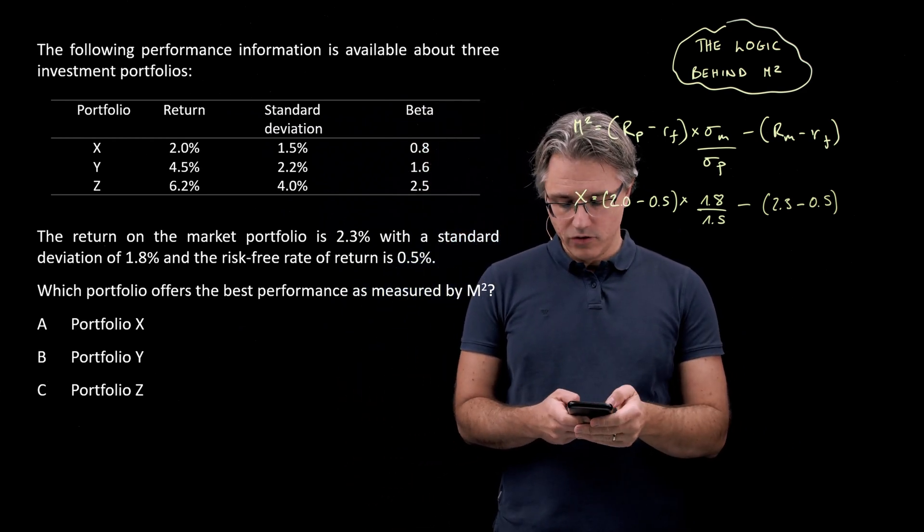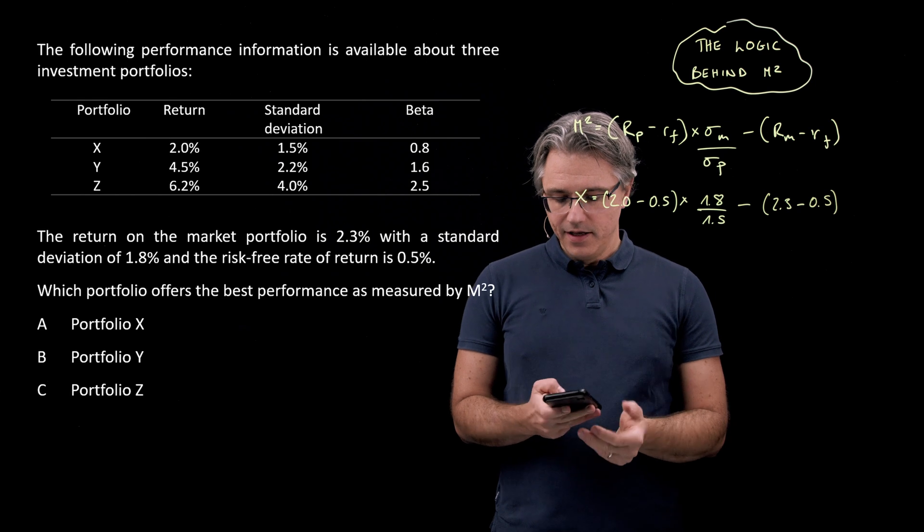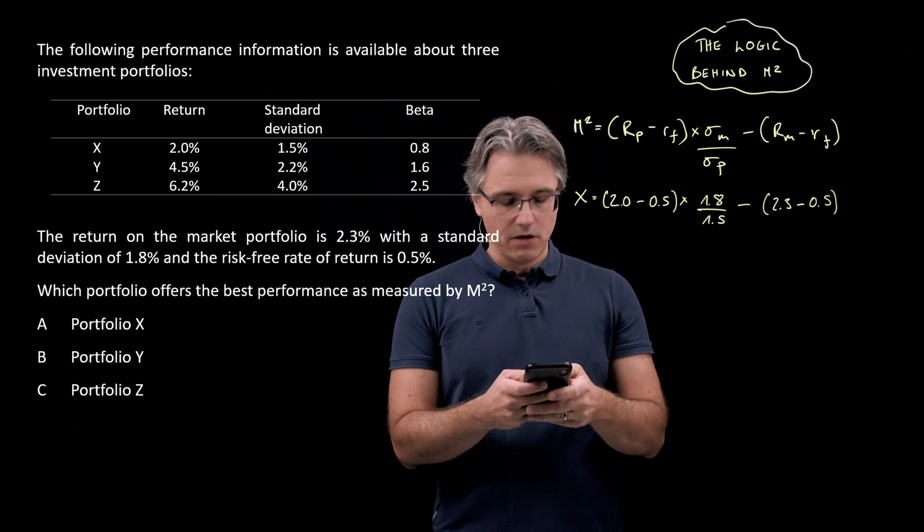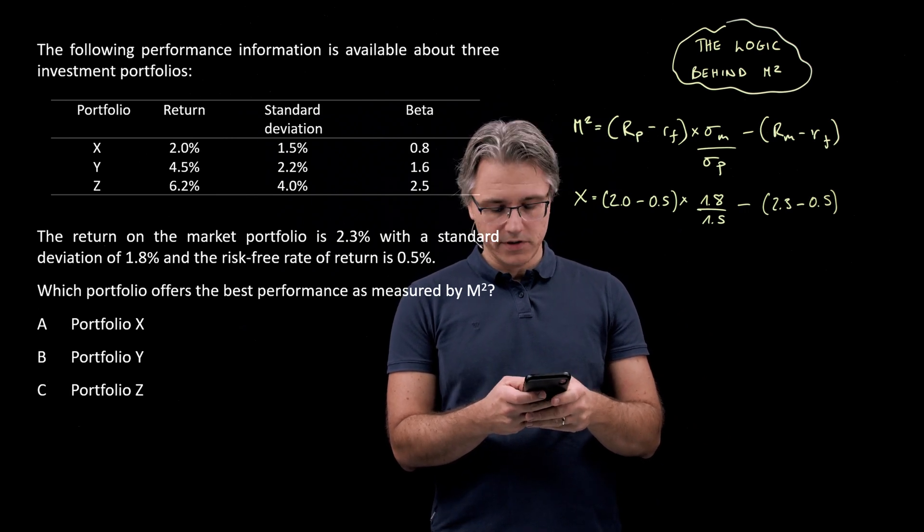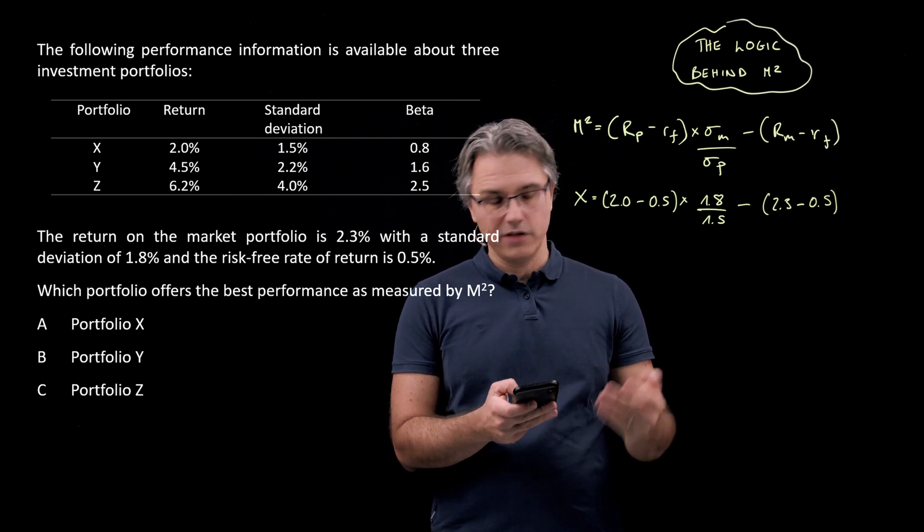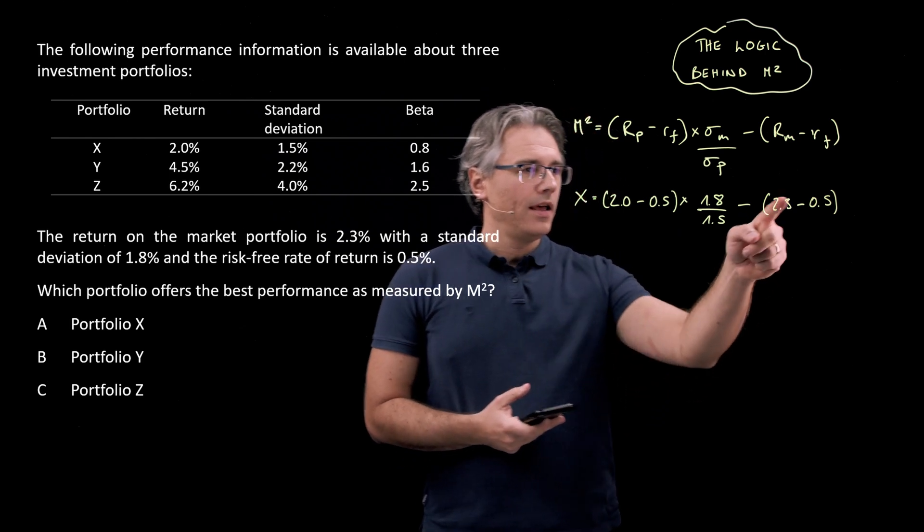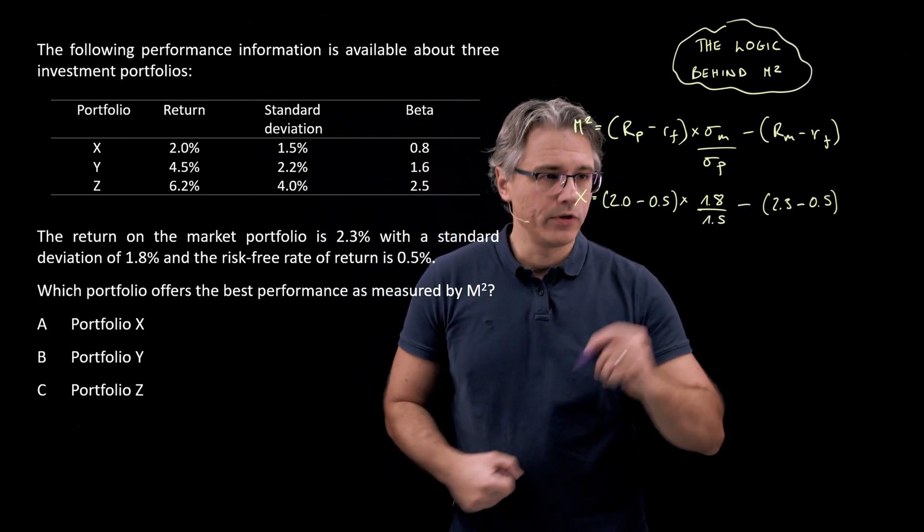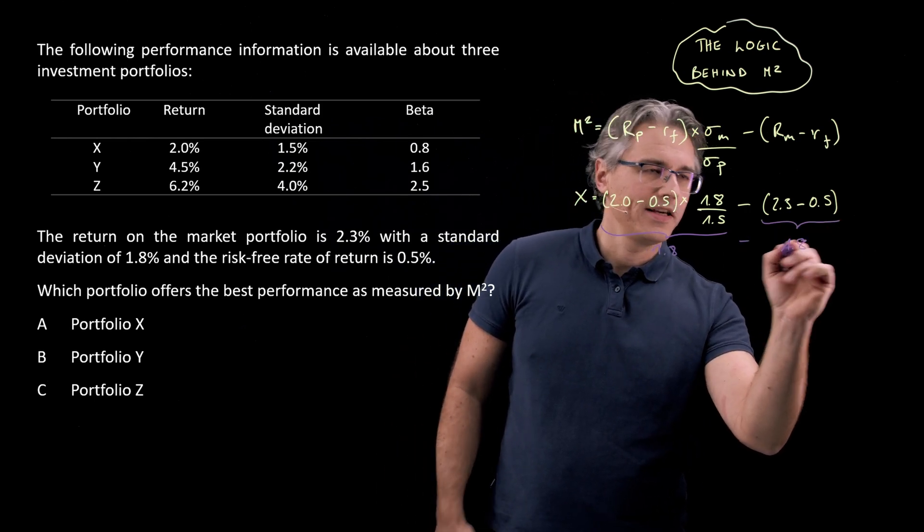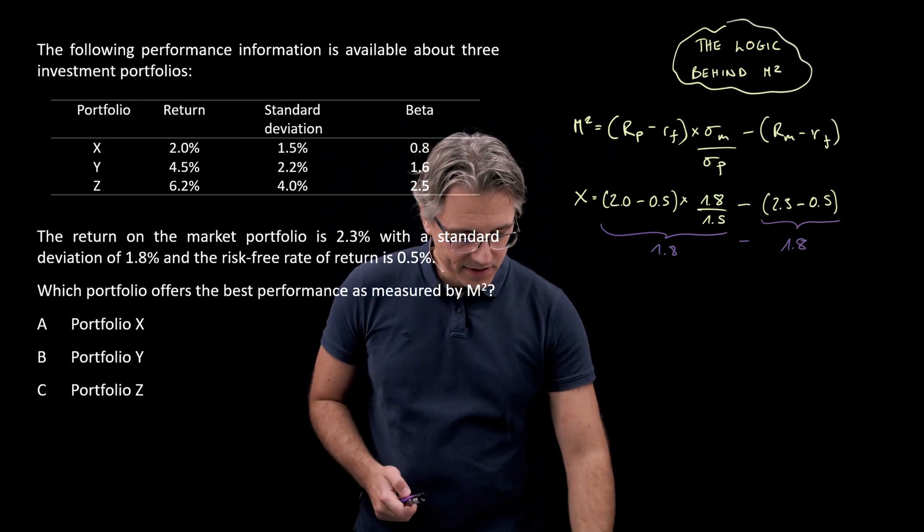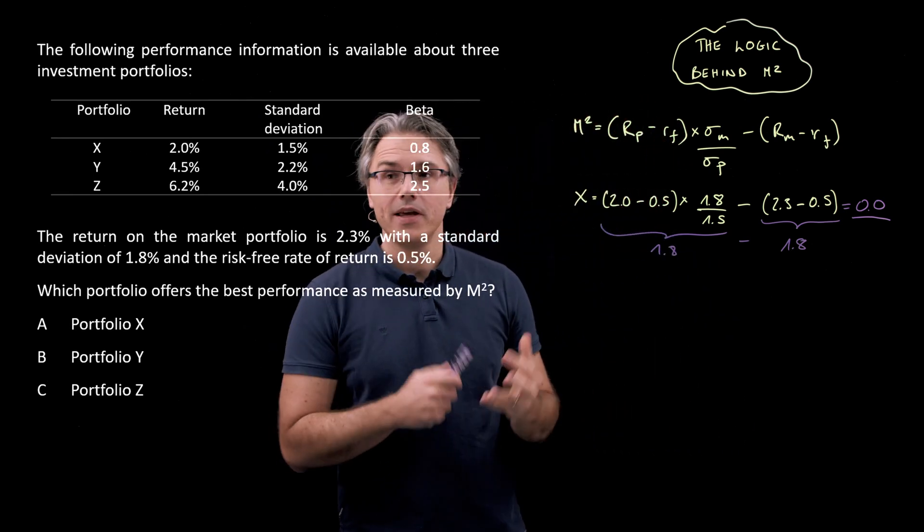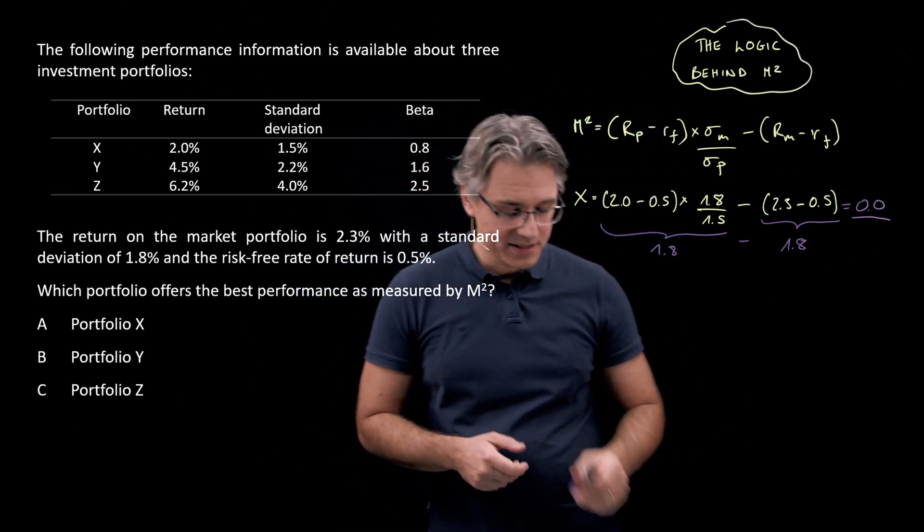I'm just quickly going to solve this on my phone, which has the calculator up on it. So this is 1.5 times 1.8 divided by 1.5, that obviously gives 1.8, and 1.8 minus, essentially, 1.8. So the result for portfolio X is a nice round zero, brilliant, something that I was hoping for, because this allows me to easily explain what's going on here.